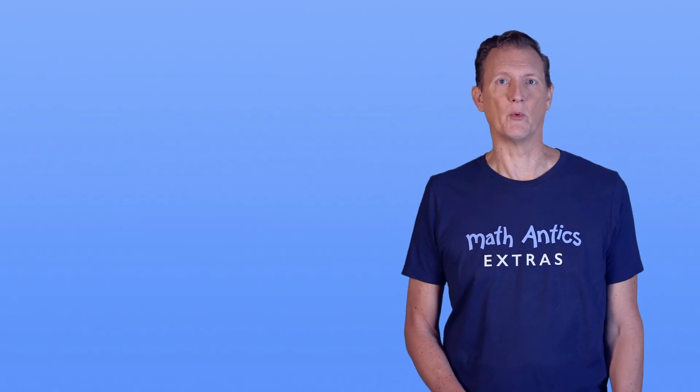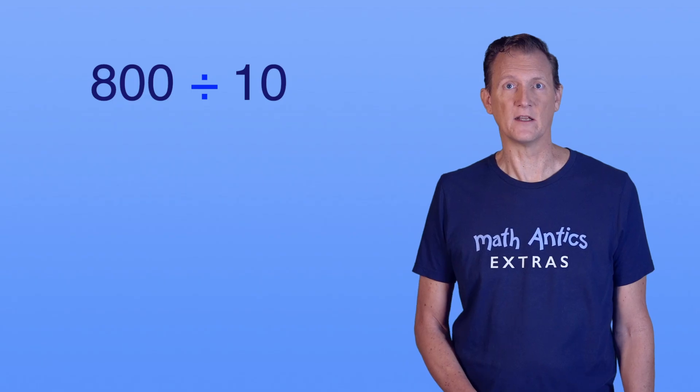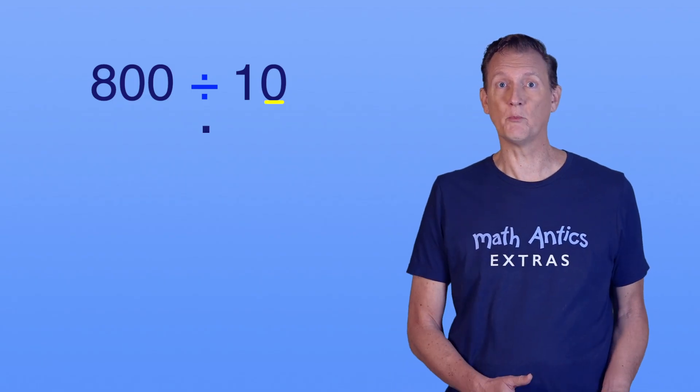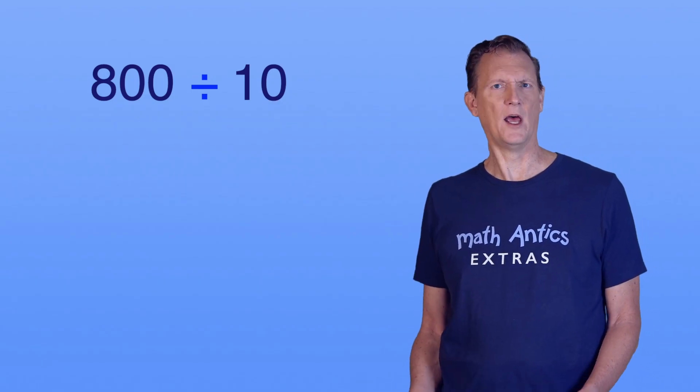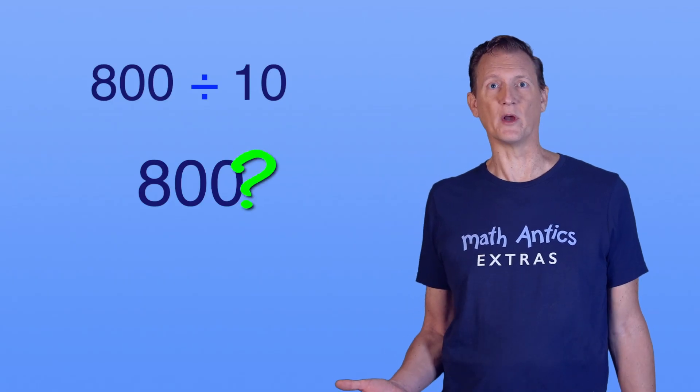Let's start with a simple one. 800 divided by 10. There's only one zero in 10, so we shift the decimal point one place to the left. But what's this? There's no decimal point.